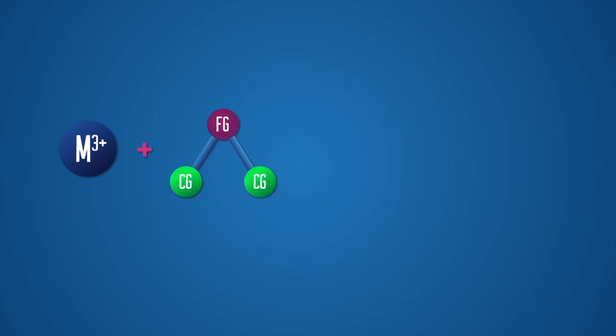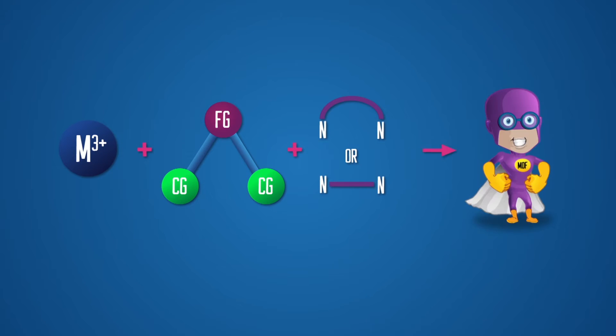Regarding the organic linkers, a flexible family with a V-shaped skeleton containing carboxylic groups as the coordinating points and some nitrogenated auxiliary linkers were chosen.